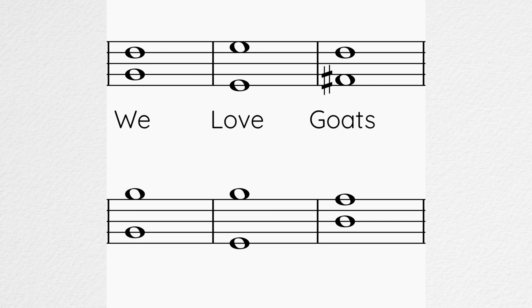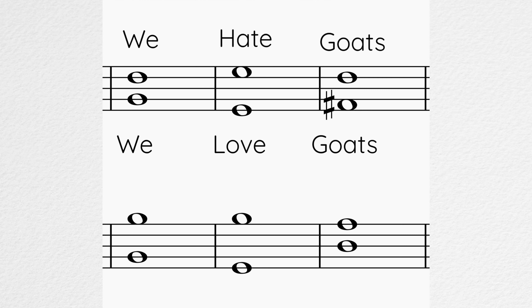Now let's see what music looks like when all the choir is singing the same words at the same rhythm. We've got the words in between the two staves. Now if we wanted to change what the sopranos were actually singing — the words — we'd have to write that above the top stave. But I really don't know why the sopranos would want to sing that. It's just so mean.